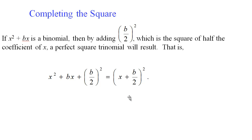Completing the square — everybody hates it, but it is actually not nearly as bad as you think. It is a technique where many students make mistakes, so I recommend using it only as a last resort. If you have the ax squared plus bx piece and you take half of b and square it, you have created a perfect square trinomial. That is what it means to complete the square — you have completed it by adding that piece.